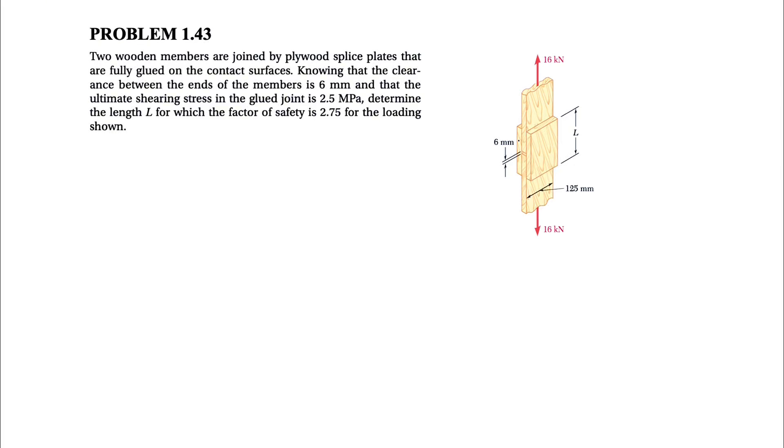All right guys, welcome back. We're going to be solving question 43 from the first chapter of the Beard Johnson textbook, Mechanics of Materials. We have two wooden members joined by plywood splice plates that are fully glued on the contact surfaces. The clearance between the two ends of the members is 6mm, so we're talking about the gap between the two plates, so here, that one's 6mm.